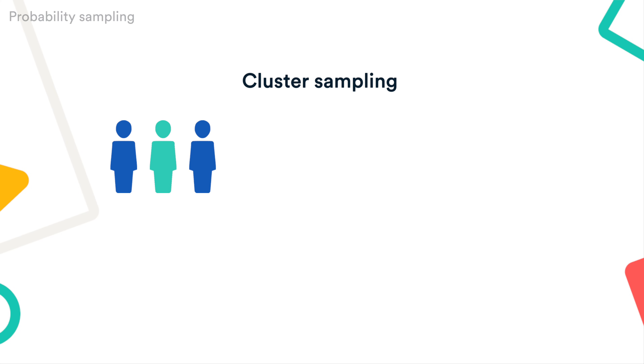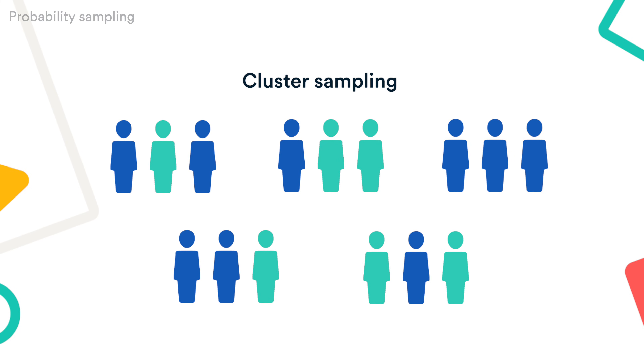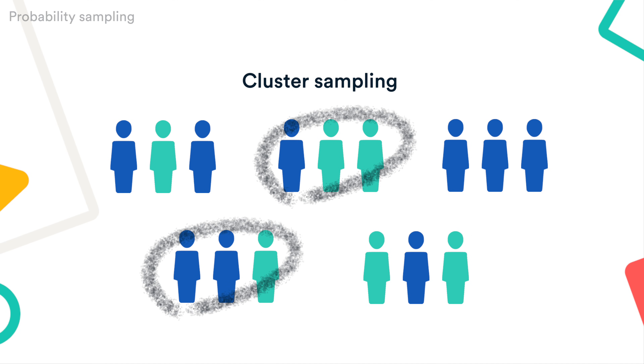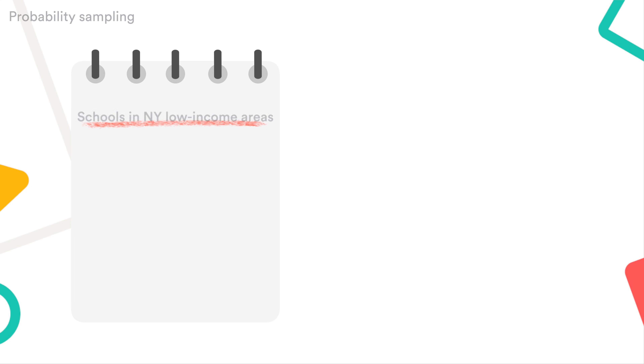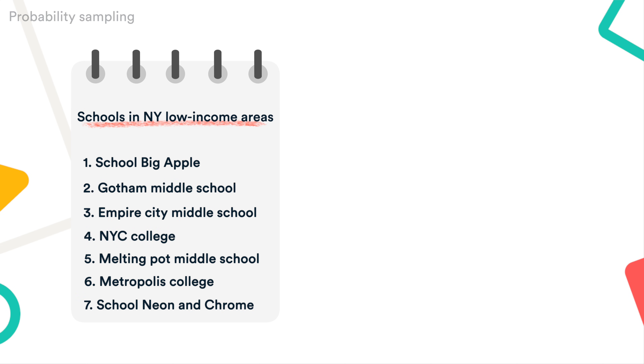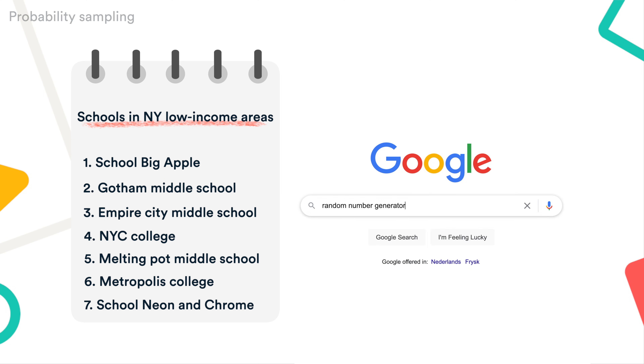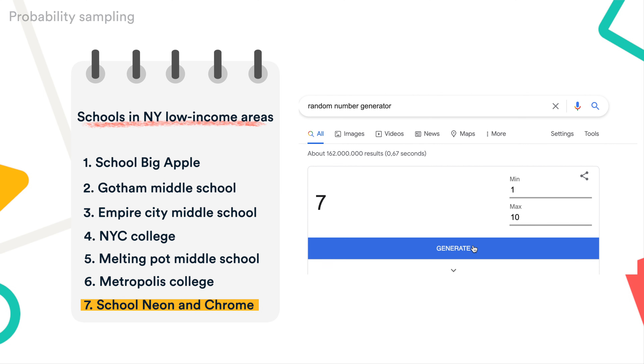With cluster sampling, you divide the population into clusters — for example, geographical areas — and randomly select some of these clusters for your sample. Probability sampling requires that you have a list of all potential subjects or clusters in the population, which means it's often quite difficult to achieve in practice unless you're dealing with a very small and accessible population. In our example, you could use cluster sampling: first, compile a list of all schools in low-income areas of New York, then use a random number generator to select a sample of schools to collect data from.